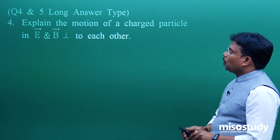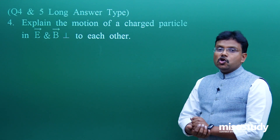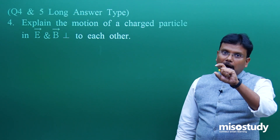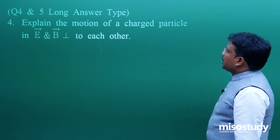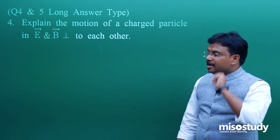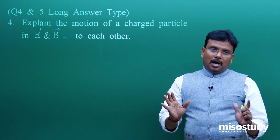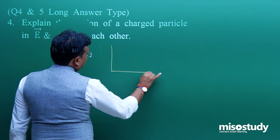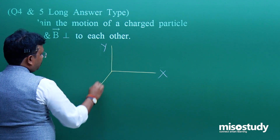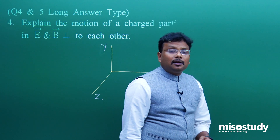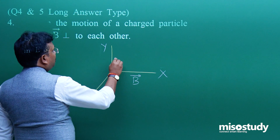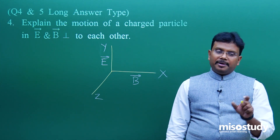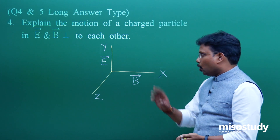Then come questions 4 and 5 — both placed in long answer type. I will not explain the entire answer here but will give you a brief idea of how you should start. Explain the motion of a charged particle in the presence of electric and magnetic fields that are perpendicular to each other. First thing for a long answer: start with a diagram. Mention the X, Y, Z axes. Since E and B are perpendicular to each other, let us say B is in one direction and E in another. Once you draw this diagram, the examiner will get a clear feeling that the student is aware of the concept.